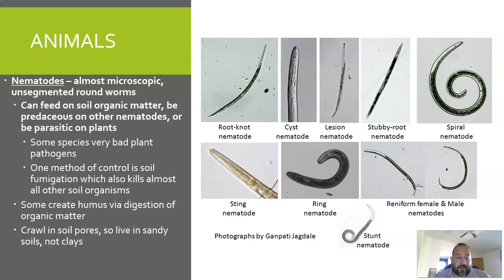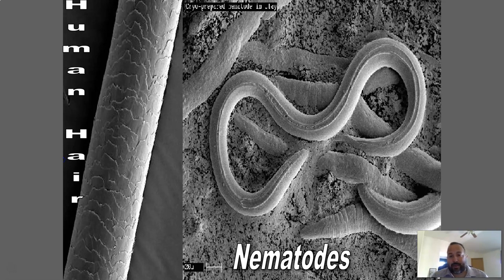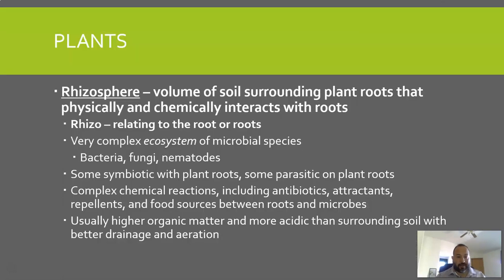Some nematodes create humus via digestion of organic matter, which is a true positive for soil. They prefer sandy soils and struggle in clay soils because they can't move through clay well. In terms of size, nematodes are roughly the width of a human hair strand — very small, but not quite microscopic. On the left in this image is a human hair, and on the right is a nematode.